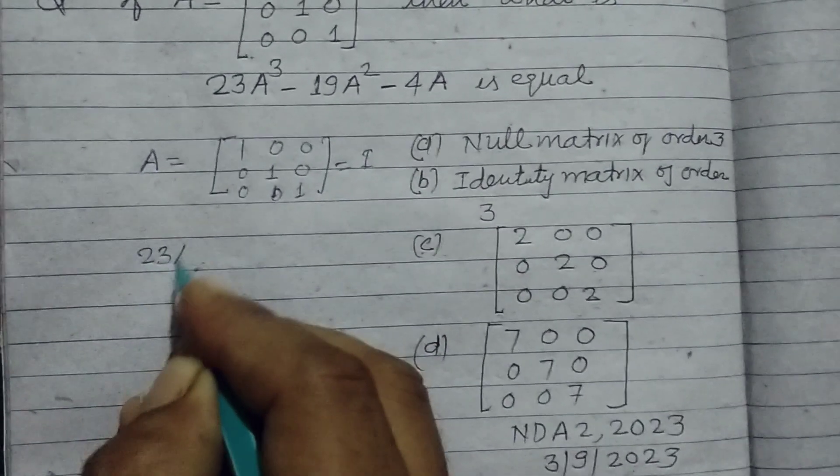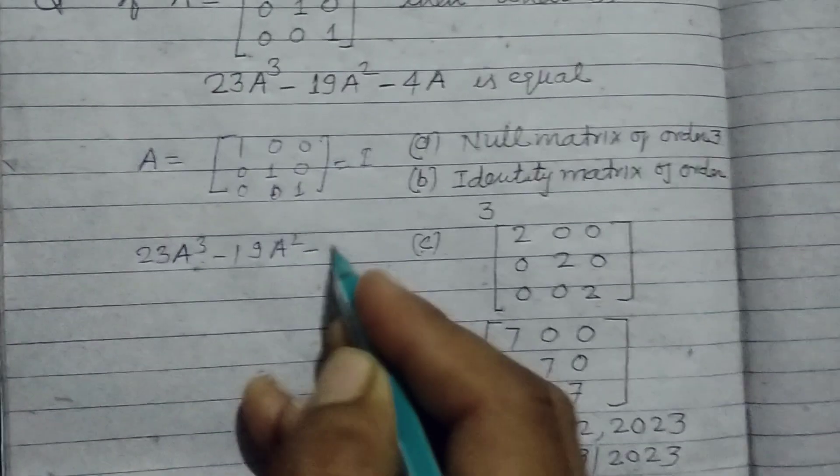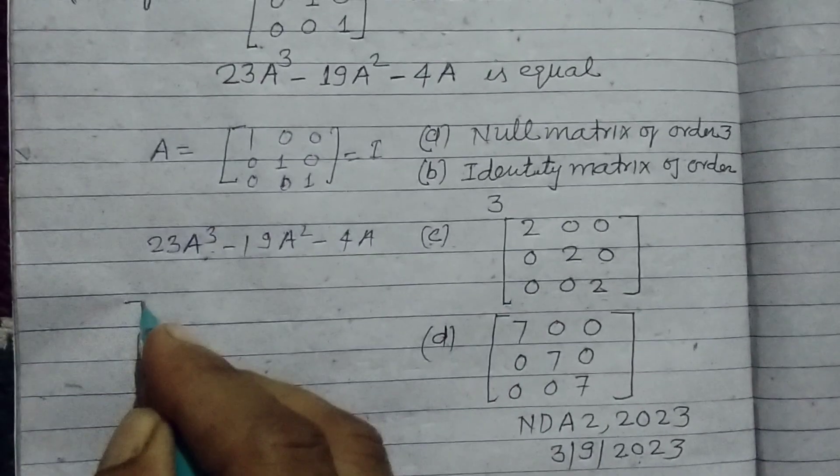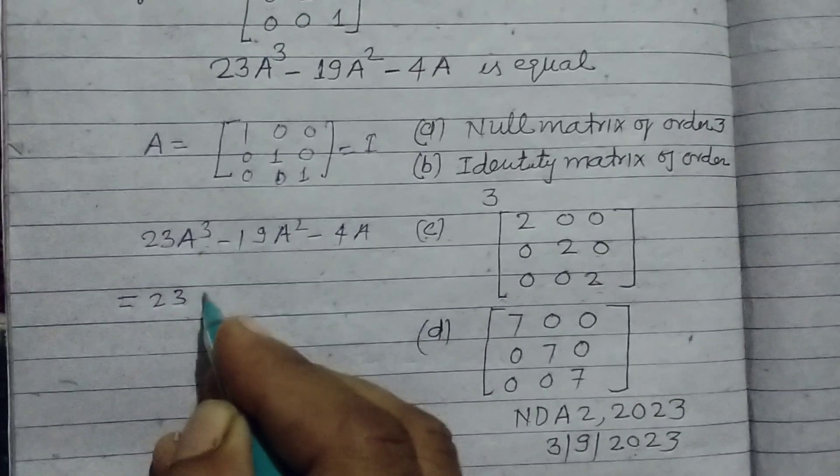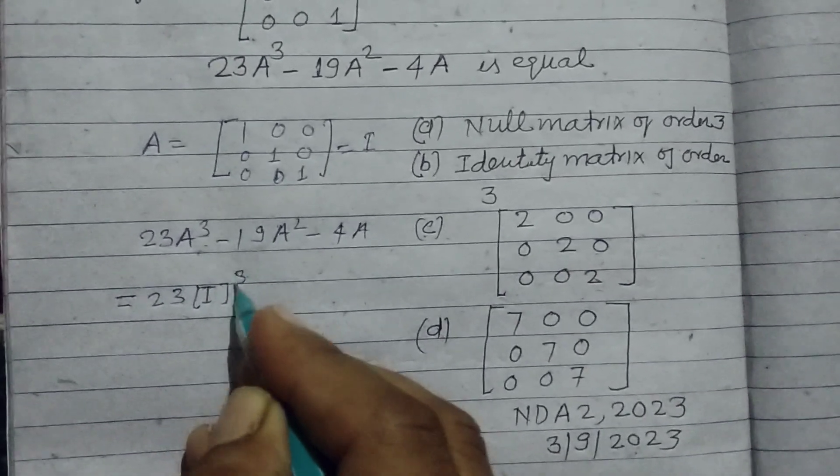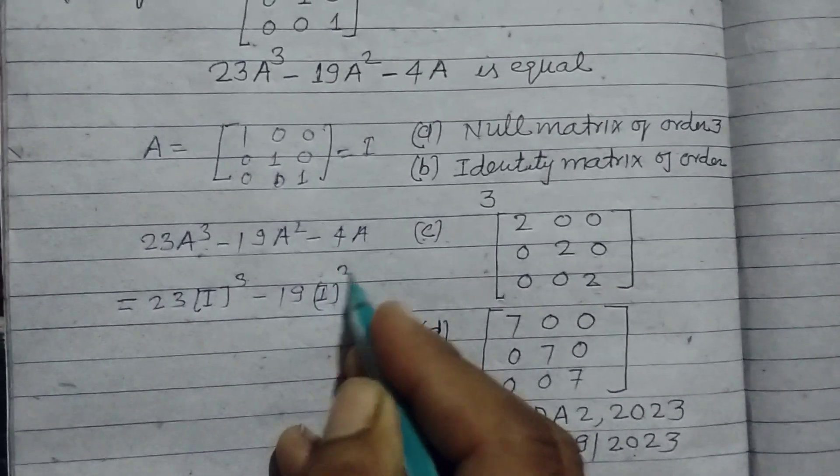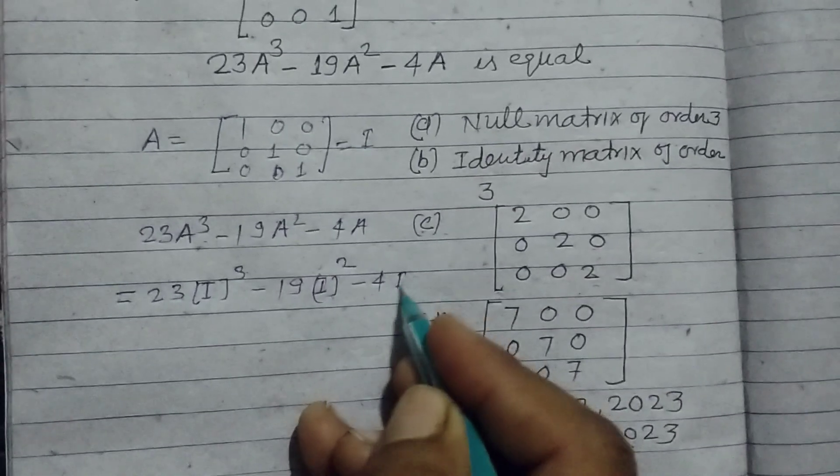Therefore 23A³ minus 19A² minus 4A, we write as 23 times identity matrix cubed minus 19 times identity matrix squared minus 4I.